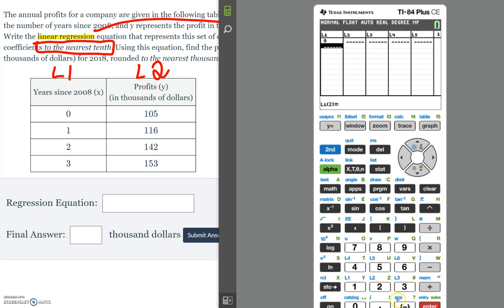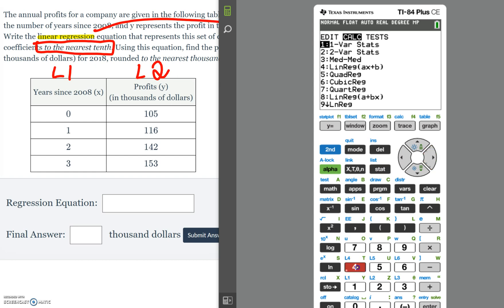So L1 was 0, it was 1, 2, and 3. We're going to hop into the L2 column, put 105, 116, 142, 153. Just a reminder, you need all the values, and then it said linear, so we're going to hit stat calc 4.